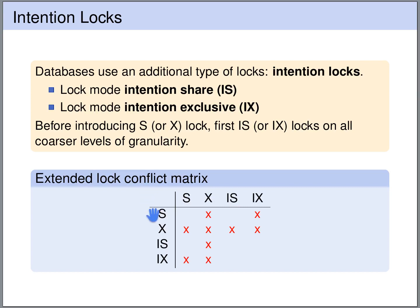For instance, if the shared lock is on the table and another transaction introduces an intention shared lock on the same table, it just means the other transaction wants a shared lock on some row — and that's fine. However, a shared lock on a table does not go together with an intention exclusive lock on the same table, because it means the other transaction wants an exclusive lock on some row, and that does not go along with a shared lock on the entire table. Exclusive locks conflict with everything. Since the conflict matrix is symmetric, we can mirror it along the diagonal.